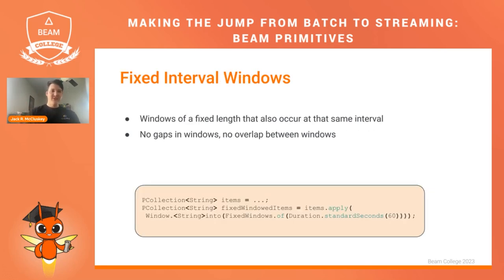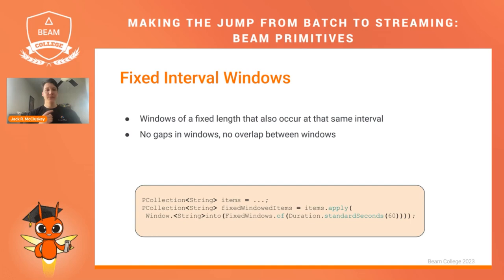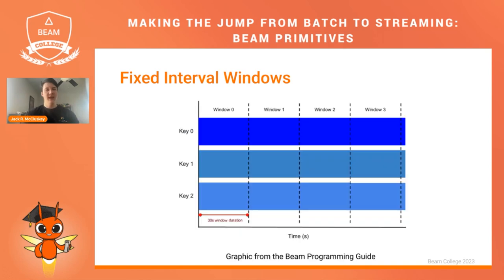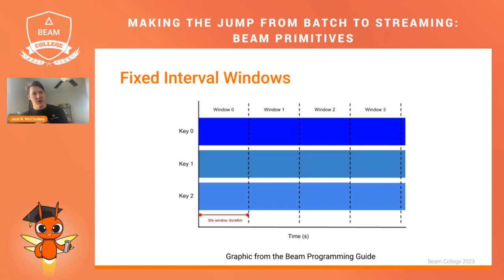Fixed interval windows are windows of a fixed length that occur at the same interval — no gaps, no overlap. In Java, you take a PCollection of strings and then window into fixed windows with a duration of 60 seconds. It's important to note that typically when you're dealing with windowing you are also applying things per key. In a 30-second window duration example, across each key you have windows 0, 1, 2, and 3 — regular intervals, no overlap, and each key gets its own definition.